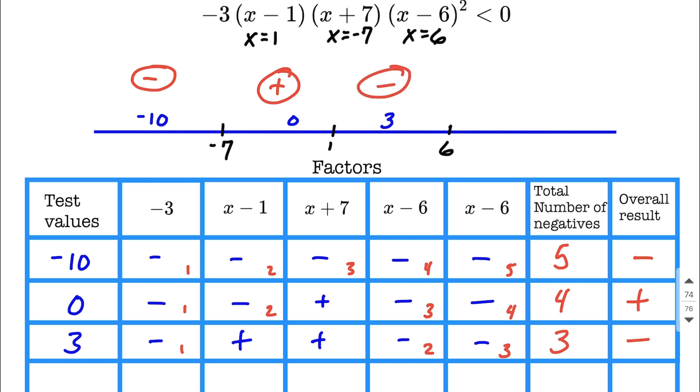And then one more test value. Let's pick anything to the right of 6. Let's go 10. Any value you pick in these portions of the number line should give you the overall same exact positive or negative result. So negative 3 is a factor. Automatically negative.